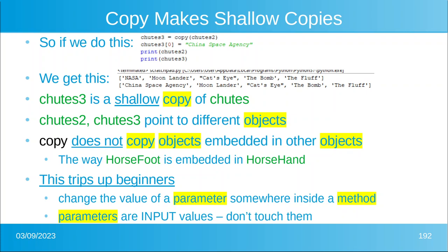shallow copy. Shoots, shoots2, and shoots3 point to different objects. However, copy does not copy objects that are embedded, the same way that horse_foot is embedded in horse_hand. This whole thing trips up beginners, because usually what happens is a beginner will change the value of a parameter somewhere inside a method. Parameters are input values — don't touch them.